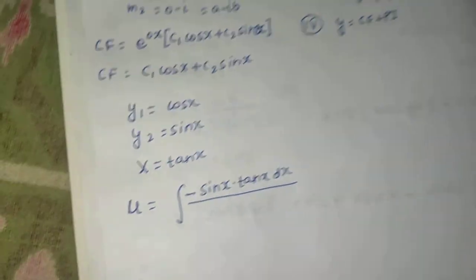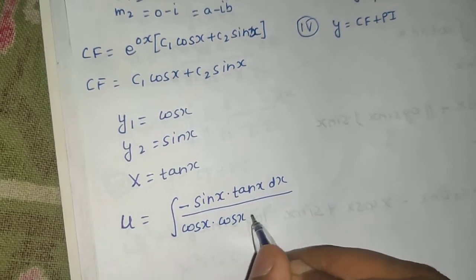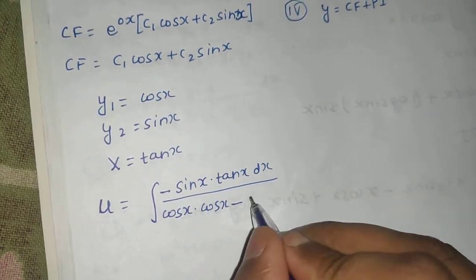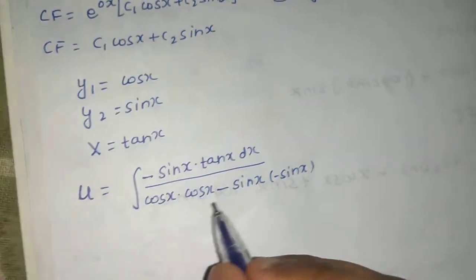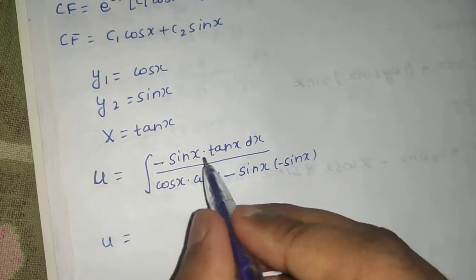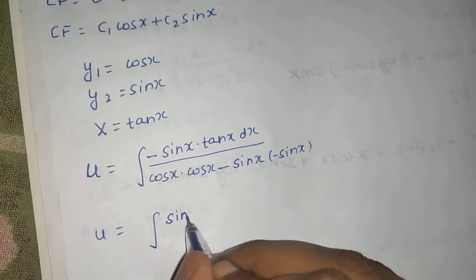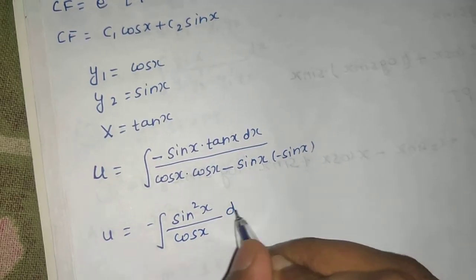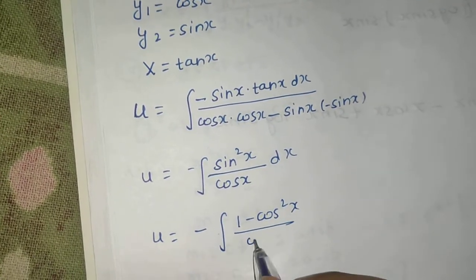The denominator is y1·(y2') − y2·(y1') = cos x·cos x − sin x·(−sin x) = cos²x + sin²x = 1. So u = integral of −sin x·tan x = integral of −sin²x / cos x. Writing sin²x = 1 − cos²x, we get integral of (−1/cos x + cos x) = integral of (−sec x + cos x).